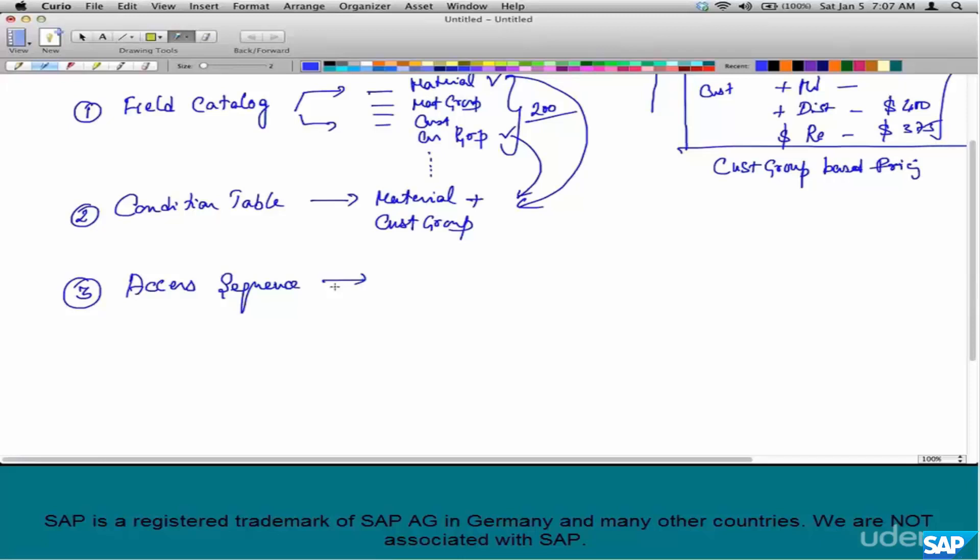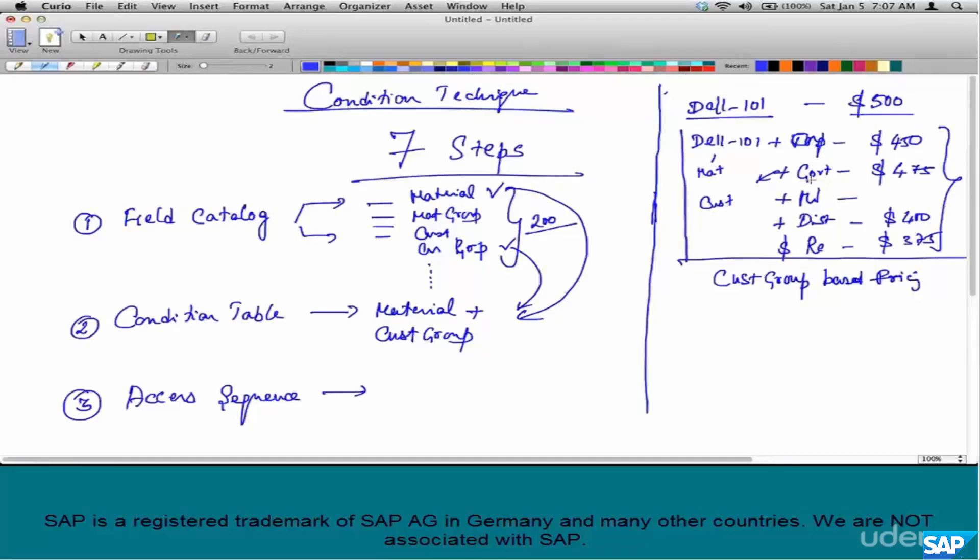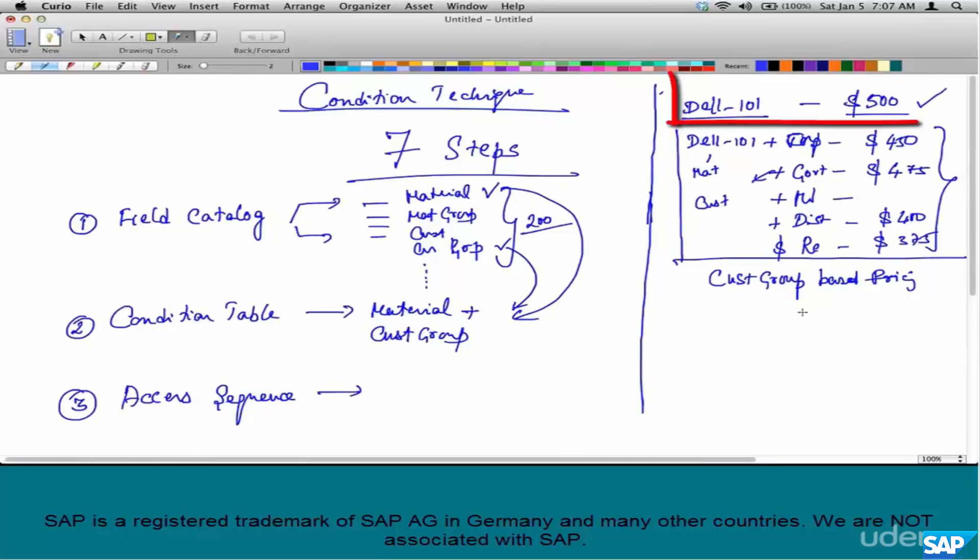To understand this, let's complicate the problem. Say there is a base price, which means the material costs $500 without any other complications.